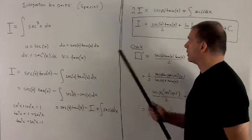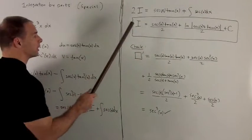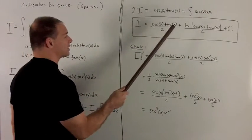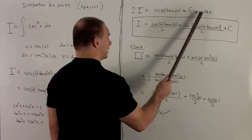Let me rewrite everything up here. I push the i to the other side, and I have 2i. We have our secant x tan x, and I have indefinite integral of secant x dx.